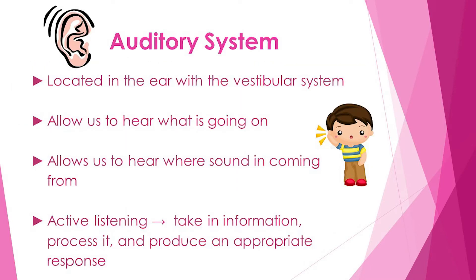The auditory system is located together with the vestibular system inside the ear. This system is how we hear what is going on around us, and it enables us to identify where a sound is coming from. It requires effort and intention to actively listen in order to take in the information, process it, and produce an appropriate response.